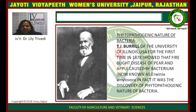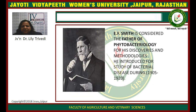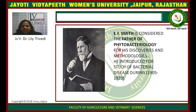The phytopathogenic nature of bacteria. T.J. Burrill of the University of Illinois, USA, was the first — in 1878 — to show that fire blight disease of pear and apple is caused by a bacterium, now known as Erwinia amylovora. It was the discovery of the phytopathogenic nature of bacteria by T.J. Burrill. E.F. Smith is considered the father of phytobacteriology for his discoveries and methodologies. He introduced methods for the study of bacterial disease during 1905 and 1920. So the father of phytobacteriology is E.F. Smith.